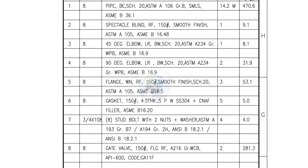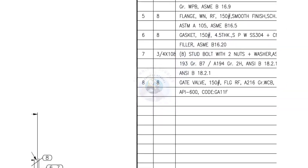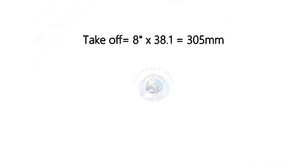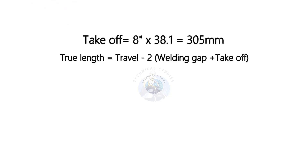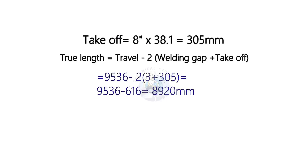Let us calculate the true length of the pipe. To calculate the true length, we need to know two things: the take off length and the welding gap. The formula for the take off of a long radius 90 degree elbow is: diameter in inches multiplied by 38.1. Let us assume the welding gap is 3 millimeters. So the cut length is 8,920 millimeters.